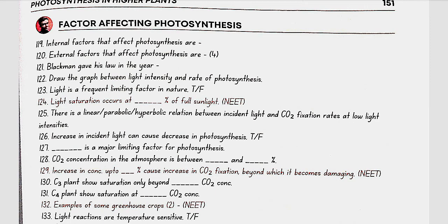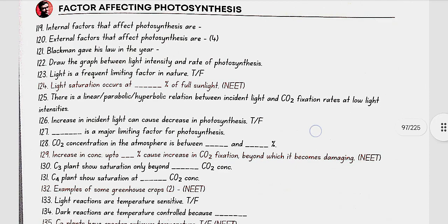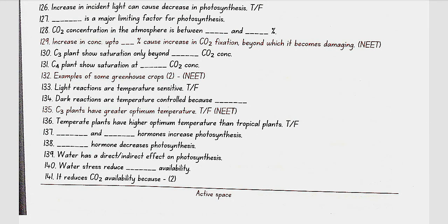CO2 is a major limiting factor for photosynthesis. CO2 concentration in the atmosphere is between 0.03 to 0.04 percent. An increase in concentration up to 0.05 percent causes an increase in CO2 fixation, beyond which it becomes damaging. C3 plants show saturation only beyond 450 µL/L CO2, while C4 plants show saturation at 360 µL/L. Examples of greenhouse crops are tomato and bell pepper. Dark reactions are temperature-controlled because they are enzymatic.